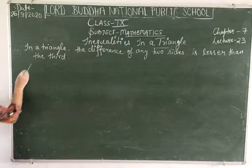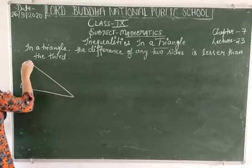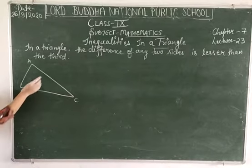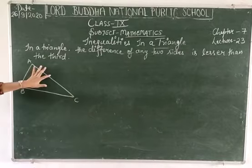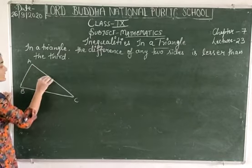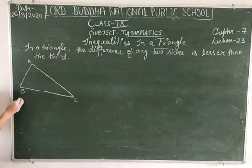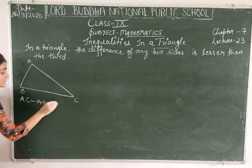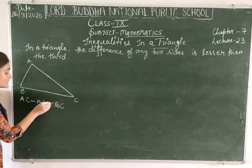Consider this triangle ABC. You can see that AC is greater than AB. So we can see that the difference of any two sides — let's say AC minus AB — is lesser than BC.